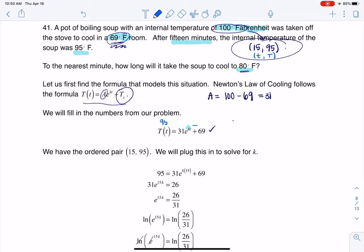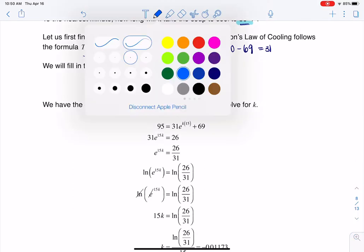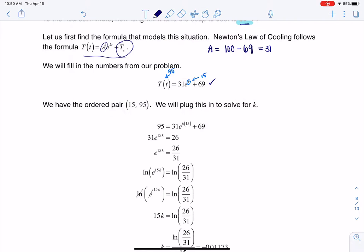So I'm quite literally going to plug in 95 here for capital T. I'm going to plug in 15 for little t and I'm going to solve for k. And that's what you see me doing throughout all of this next stuff. I plug in my numbers and like always I want to isolate the exponential term.